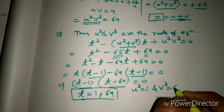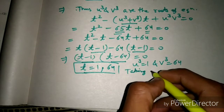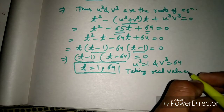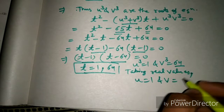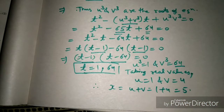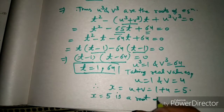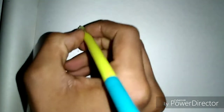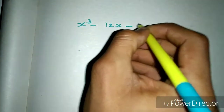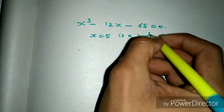Let u³ = 1 and v³ = 64. Taking real values: u = 1 and v = ∛64 = 4. Therefore x = u + v = 1 + 4 = 5. So x = 5 is a root of the equation. The equation was x³ - 12x - 65 = 0, and x = 5 is a root.